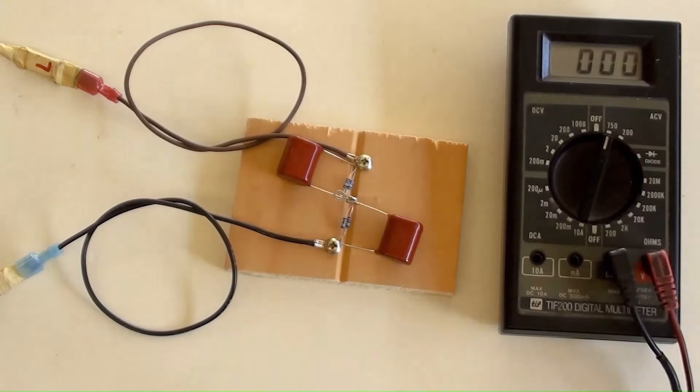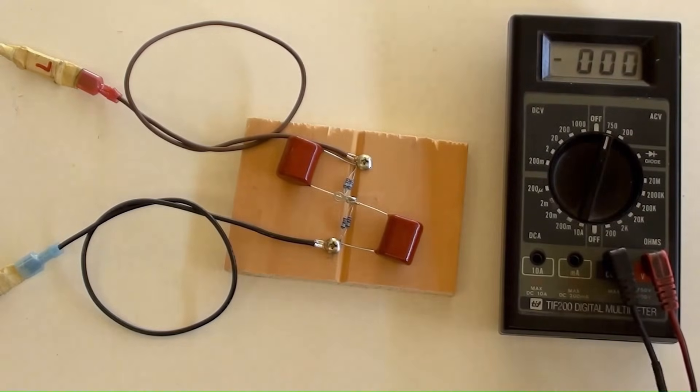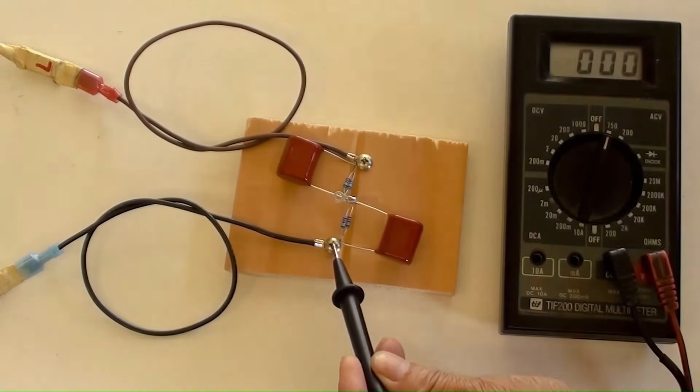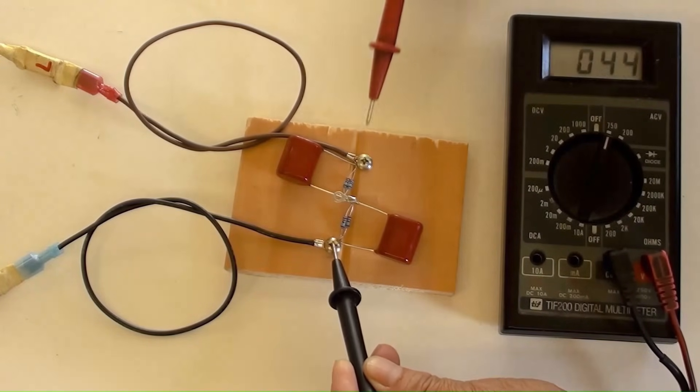The AC position has been selected on the multimeter. Switch the AC power on. Be careful, dangers. This is the input voltage of AC 236V, showed on the multimeter.